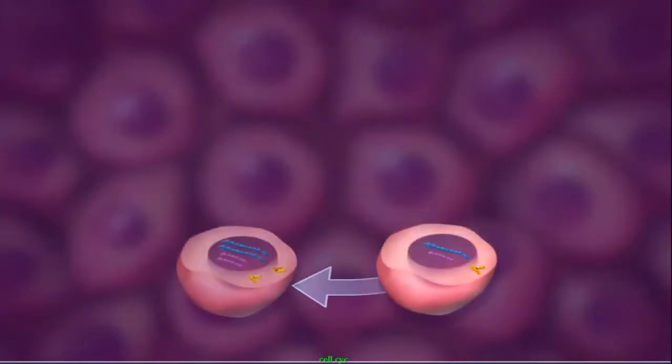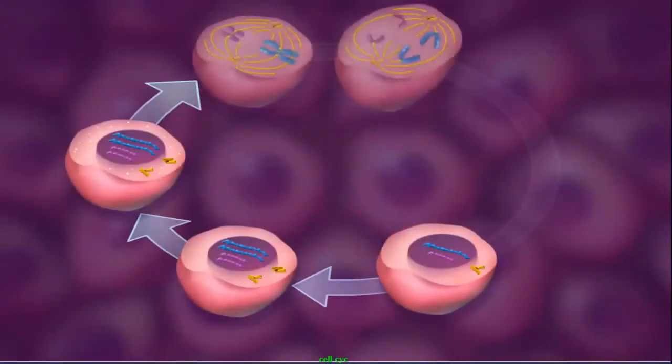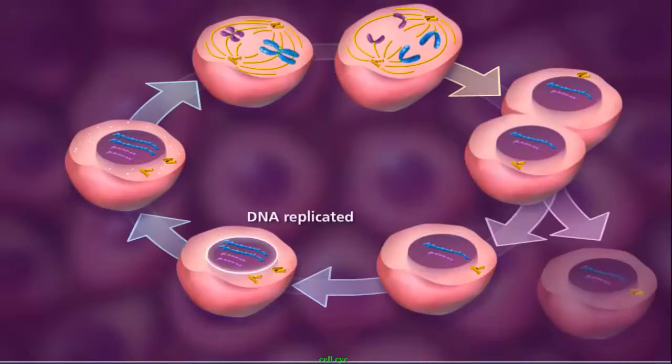Prior to cell division, where the cell divides into two identical cells, the DNA needs to be replicated so that each daughter cell receives an exact copy.